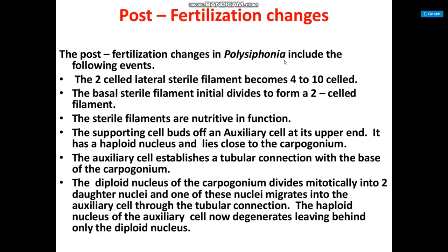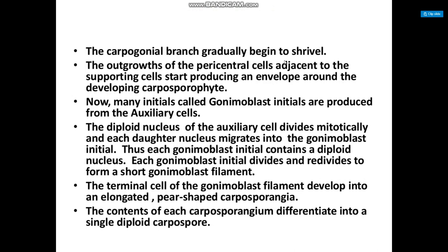The diploid nucleus of the carpogonium divides mitotically into two daughter nuclei, and one of these nuclei migrates into the auxiliary cell through the tubular connection. The haploid nucleus of the auxiliary cell then degenerates, leaving behind only the diploid nucleus. The carpogonial branch gradually begins to deteriorate, and outgrowth of the pericentral cells adjacent to the supporting cell starts producing an envelope around the developing carposporophyte.